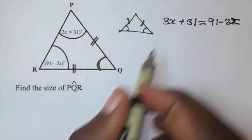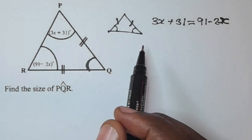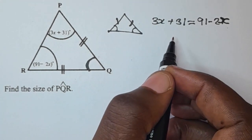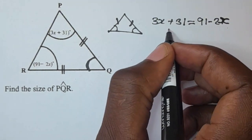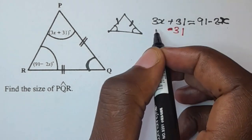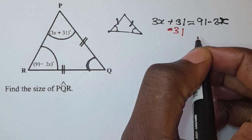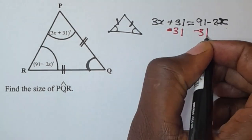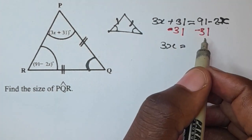Now we solve for x. We are collecting like terms together. This is positive 31, so to remove it from the left hand side we subtract 31 using the additive inverse — subtracting on both sides so the equation stays balanced. This becomes zero, leaving 3x equal to 91 minus 31, which is 60, minus 2x.